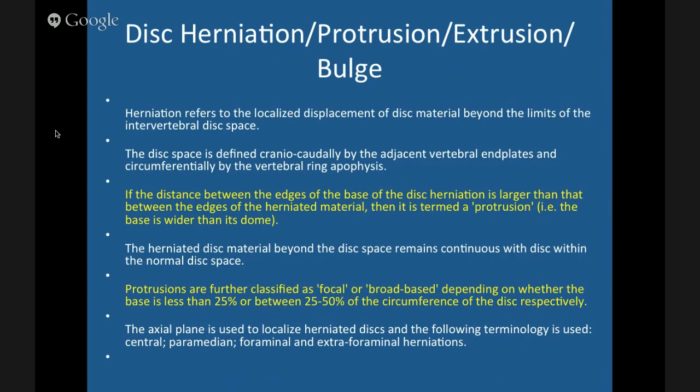Moving on to degenerative disc disease terminology. The terms we use when talking about a disc are bulge, herniation, protrusion, or extrusion. The easiest thing to remember: a bulge involves more than 180 degrees of the disc; a herniation is less than 180 degrees. A herniation can be either a protrusion or an extrusion — bulge and herniation are two separate entities.